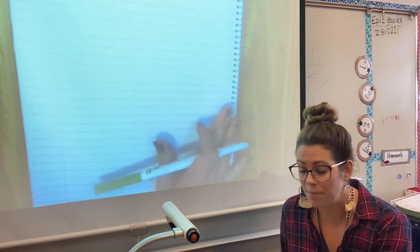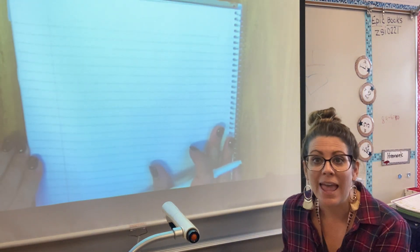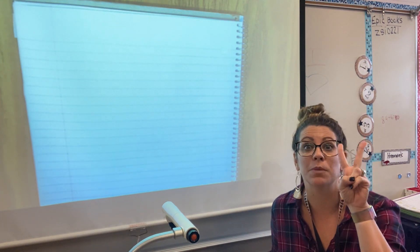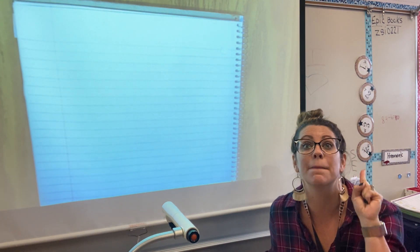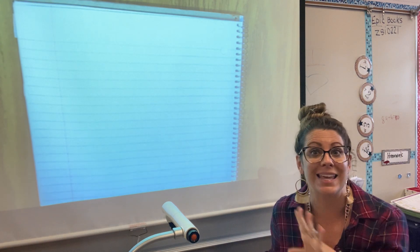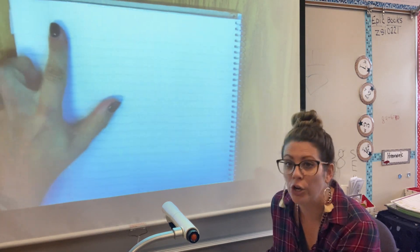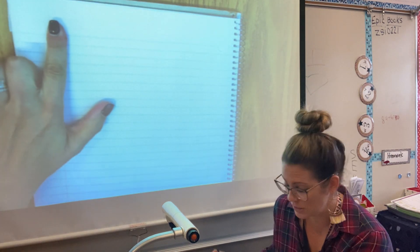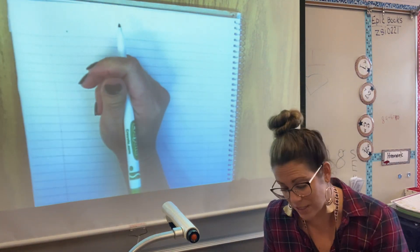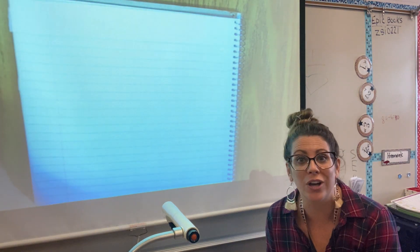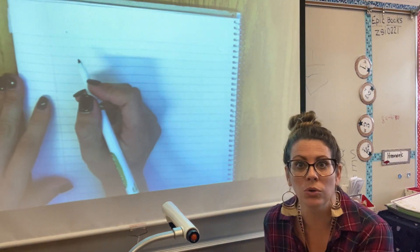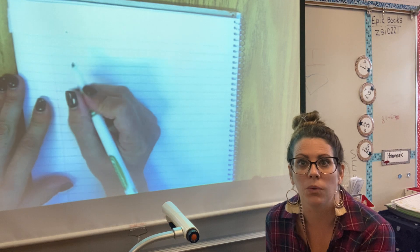So you're going to watch me write my first two paragraphs. And then I'm going to send you off to just do the first two. What are they? The beginning and attempt number one. We want to make sure we're in our writer's notebooks, we are indenting, and we are starting with that hook — that sentence starter. So I had: one dark Halloween night.